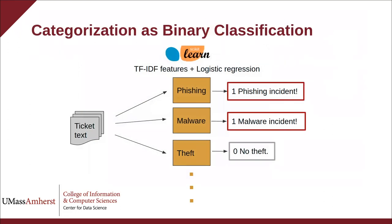Although we prototyped categorizing helpdesk tickets using keyword matching, we believe machine learning models will have better performance once labeled training data is available. Each ticket can describe multiple types of incidents, so we provided a script to the CDR team to train separate binary classification models for each taxonomy label. Our approach uses scikit-learn to build logistic regression models with bag-of-words or bag-of-n-grams features, with cross-validation to select the model and feature parameters with the best F1 measure for each label. The resulting saved models will be added to CDR's ticket processing pipeline.